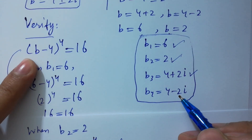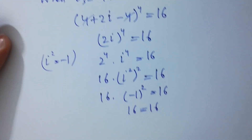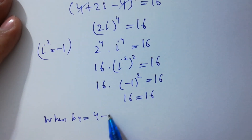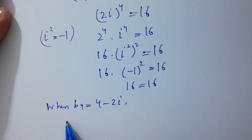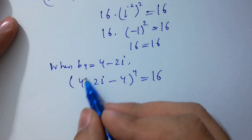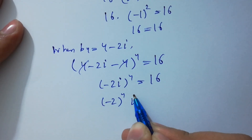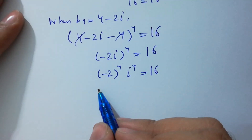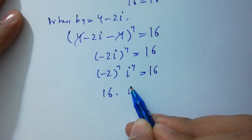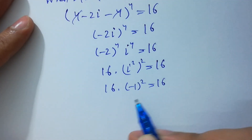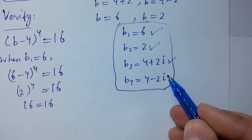For b₄ = 4-2i, putting it in: (4-2i-4)⁴ = (-2i)⁴ = (-2)⁴ · i⁴ = 16 · (i²)² = 16 · (-1)² = 16 · 1 = 16. So 16 = 16, which shows that b₄ = 4-2i also satisfies the equation.